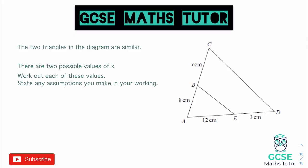Okay, so looking at this question, it says the two triangles in the diagram are similar. There are two possible values of x. Work out each of these values and state any assumptions you make in your working. Now, what makes this question very unique is the fact that it says there are two possible values of x. Let's think about why that might be.